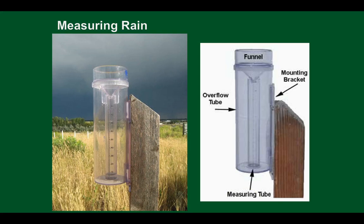The last thing we're going to talk about today is how scientists measure precipitation. We talked about those types: rain, hail, snow, and sleet. This is an official rain gauge used by volunteers all over the United States — and you too could get one of these gauges and help the National Weather Service by taking accurate measurements. The gauge has four parts: the outer cylinder, the inner measuring tube, the mounting bracket, and a funnel.